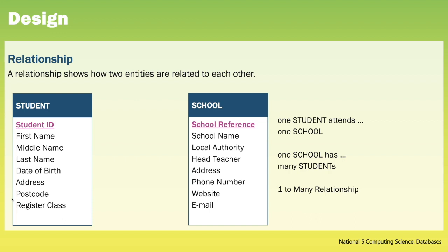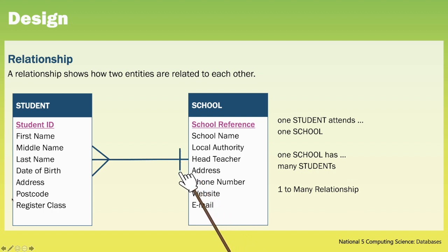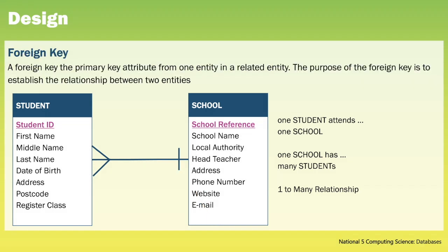We can then draw that relationship between our entities. The crow's foot here represents the many side of the relationship, and you'll see that the crow's foot and the word many are attached to the student table. The bar crossing the relationship line represents the one side of the relationship. A foreign key is the primary key attribute from one entity used in a related entity. The purpose of the foreign key is to establish the relationship between two entities. In this case our foreign key is the school reference in the student table. The foreign key always goes in the entity at the many side of the relationship, so school reference goes into the student table.